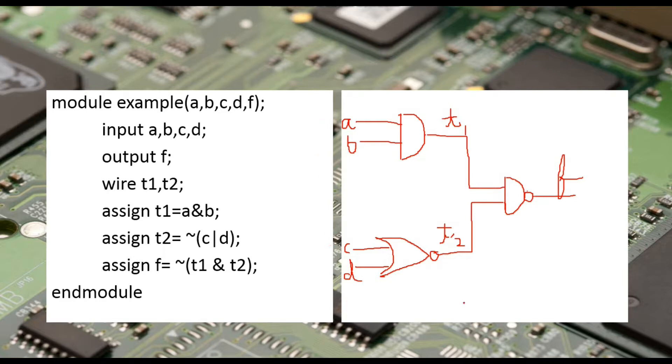So we want to implement this circuit using hardware description language Verilog. So what would be the structure of my module? First of all I will write module, then the name of module. Here the name of my module is example. Then what are the inputs and what are the outputs? So a, b, c, d are the inputs, whereas f is the final output.